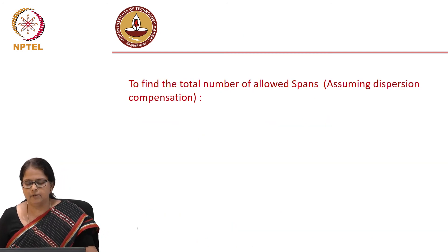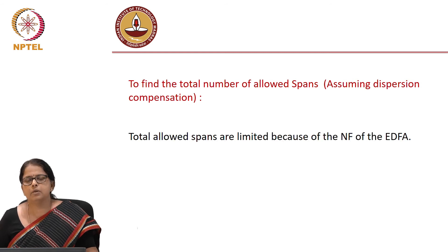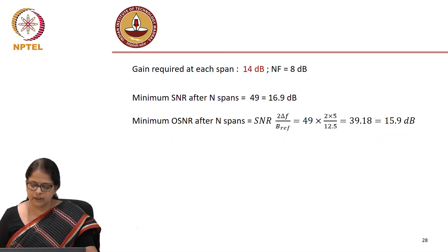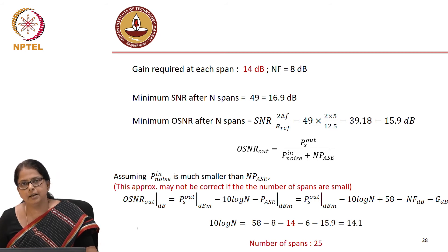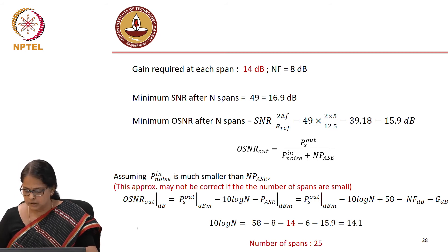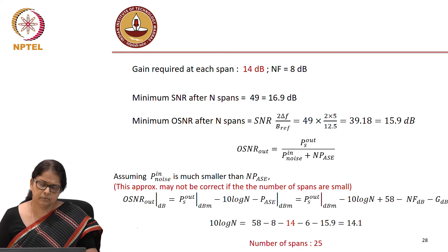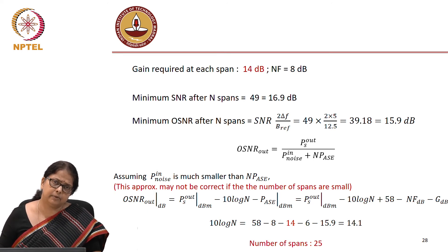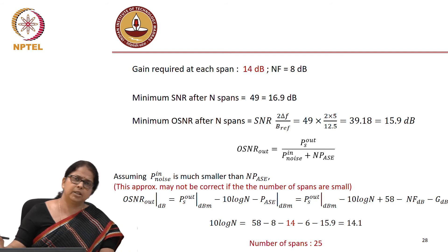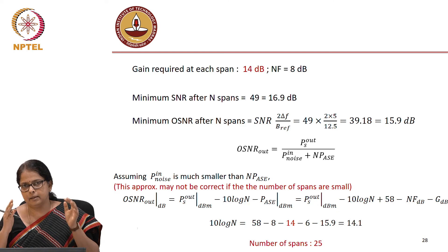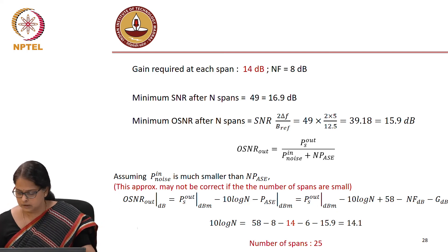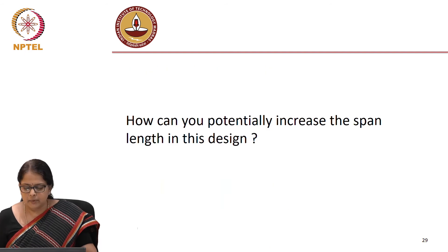The question is again: find the total number of spans. The total number of spans is limited by the EDFA noise figure. That calculation is exactly identical to yesterday's, except that today we had an additional loss margin, so the number of spans turns out to be 25. The dispersion compensation fibre has not changed this calculation at all, simply because the total loss margin remains the same, and the number of spans is decided only by the loss margin.